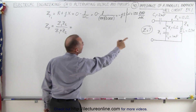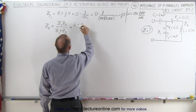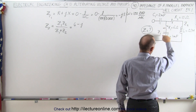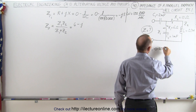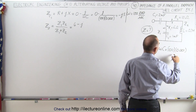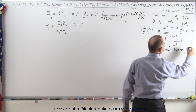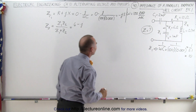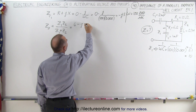Z1 has a real part with a 6-ohm resistor, and then minus j times 1 over omega times C. For Z1, omega times C is 100 times 0.001, which equals 0.1 in the denominator, so 1 over 0.1 equals 10. The negative sign gives us minus j10. So Z1 = 6 minus j10.